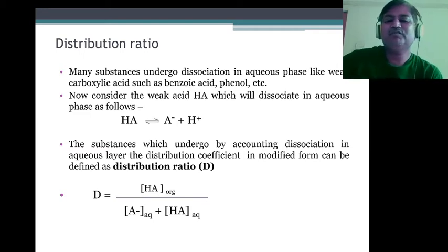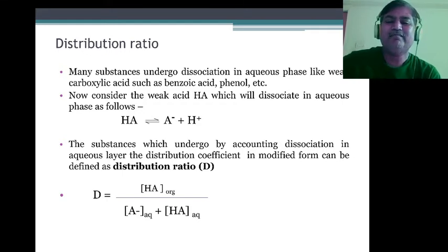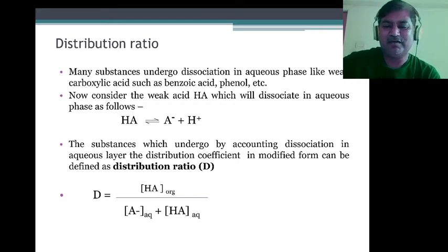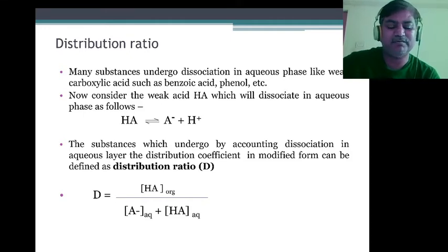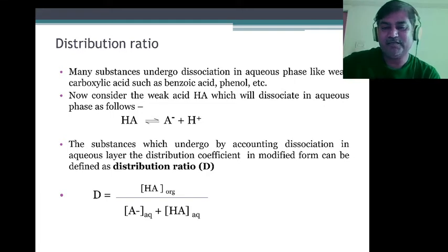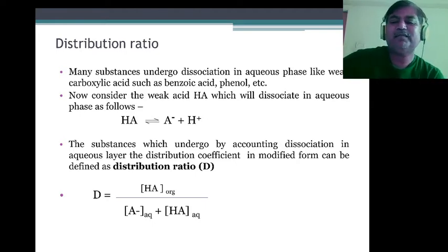According to the distribution ratio, whenever we consider a general acid HA in aqueous phase, it dissociates into A⁻ and H⁺ ions, while some of the acid remains undissociated in aqueous phase. The total concentration in aqueous phase is [A⁻]aq plus [HA]aq (undissociated), and [HA] in organic phase is the numerator. This is called the distribution ratio.